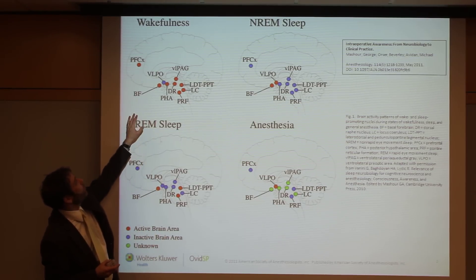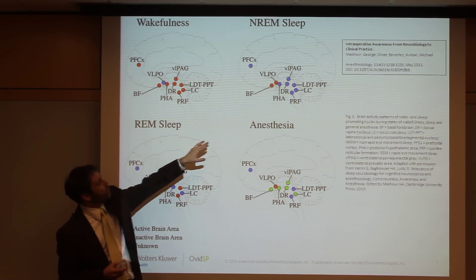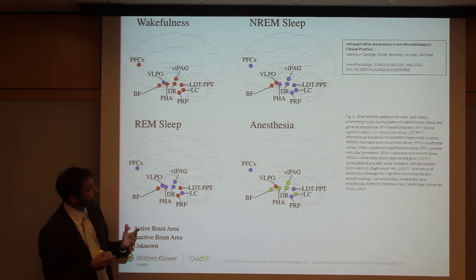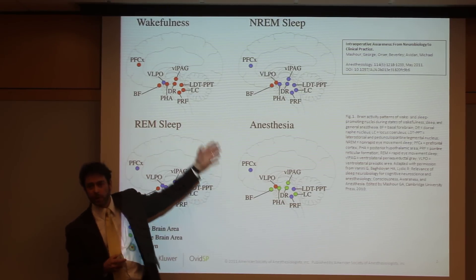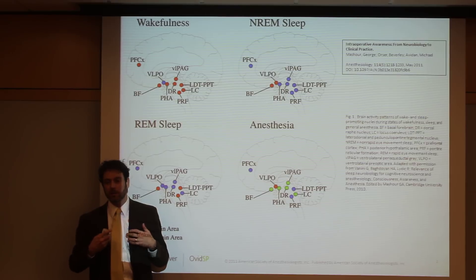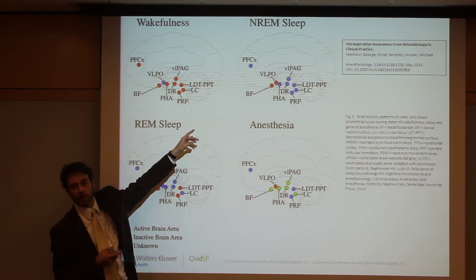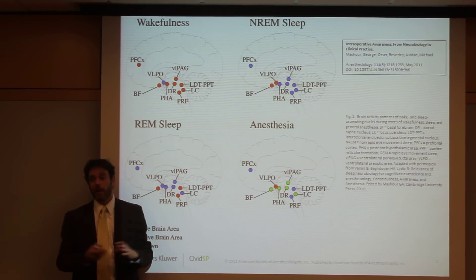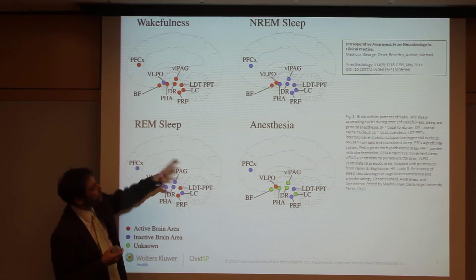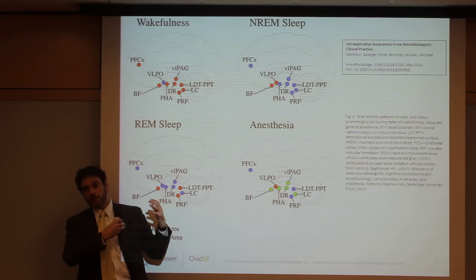When you have the non-REM sleep state compared with the wakefulness state, a lot of the nuclei that were active during wakefulness are now switched to the inactive state, including the locus coeruleus, which produces norepinephrine, histamine-producing nuclei, and acetylcholine-producing nuclei, whereas the ventrolateral preoptic area is now active. It sends out GABA as an inhibitory neurotransmitter to many of these nuclei to inhibit them and to cause a switch from a wake state to a sleep state.